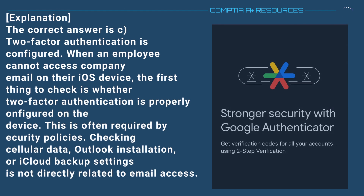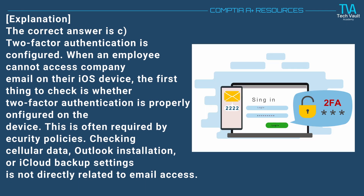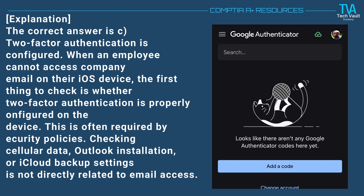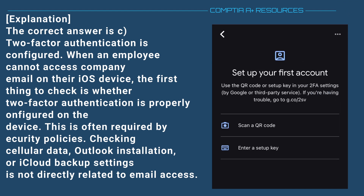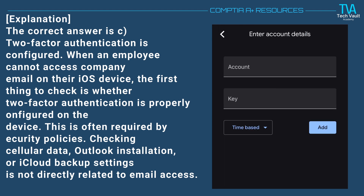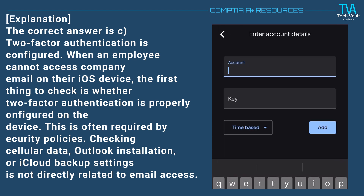The correct answer is C. Two-factor authentication is configured. When an employee cannot access company email on their iOS device, the first thing to check is whether two-factor authentication is properly configured on the device. This is often required by security policies. Checking cellular data, Outlook installation, or iCloud backup settings is not directly related to email access.